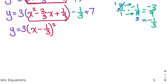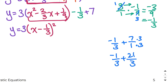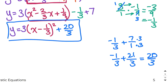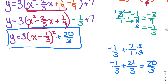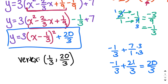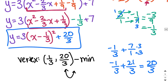Then I have to collect my like terms — put the negative 1 third and the 7 together. To do that I need a common denominator. Seven over 1 multiplied by 3 over 3 gives 21 over 3. Then negative 1 third plus 21 over 3 is 20 over 3. So this is our equation in vertex form. Our vertex is going to be positive 1 third, positive 20 over 3. This vertex is a minimum because the a value is positive, meaning the parabola opens up and the vertex is at the bottom.